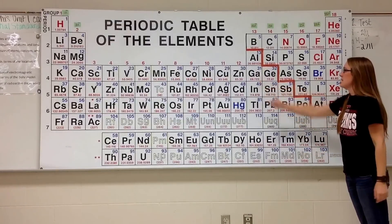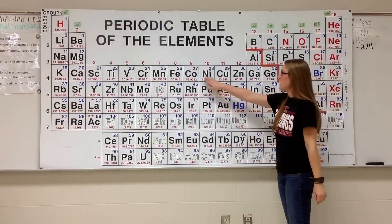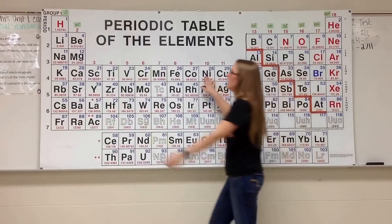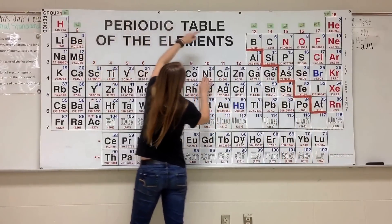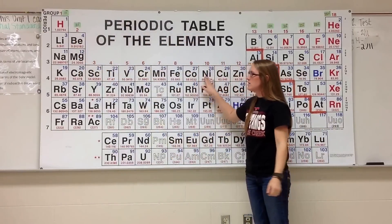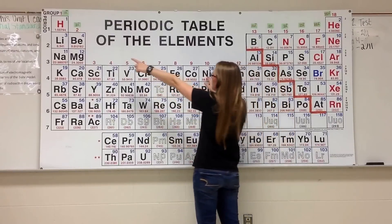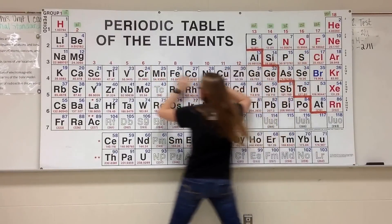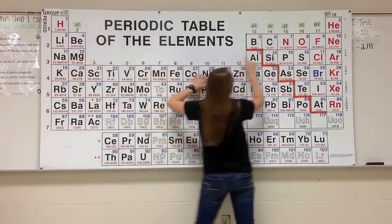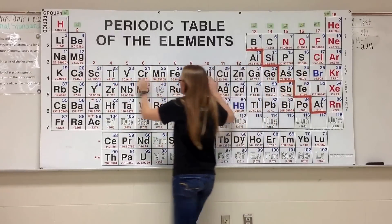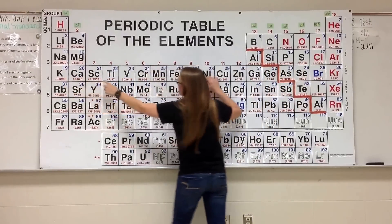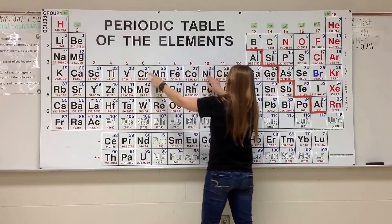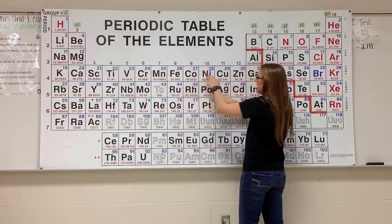Then what if I did something like nickel? Here I have my first energy level full — 1s2. Then 2s2, 2p6, 3s2, 3p6, 4s2, and then 3d with 1, 2, 3, 4, 5, 6, 7, and 8 electrons — so 3d8.